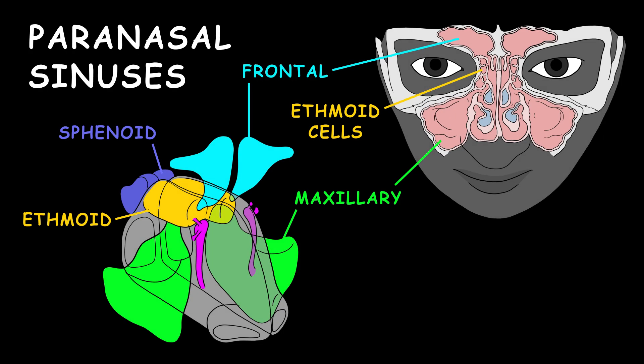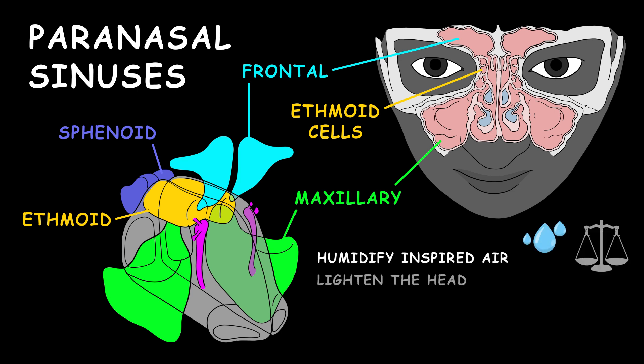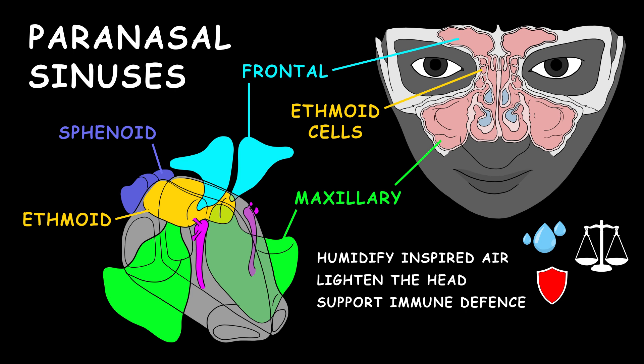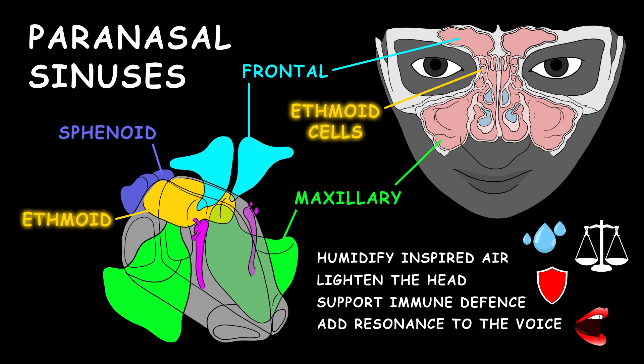Filled with air, four kinds of paranasal sinuses extend from the nasal cavity. Paranasal sinuses are thought to have the following functions: they humidify inspired air, lighten the head, support immune defense, and add resonance to the voice. They are named based on the bone in which they are found: frontal, maxillary, sphenoid, and ethmoid.